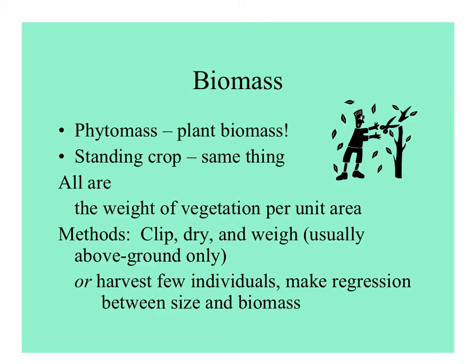Biomass is an indication of productivity, or the total plant phytomass on a site. The term standing crop means the same thing. All are different ways of saying the weight of vegetation per unit area. A way of measuring this is to cut the plant, dry it, and weigh it — usually just the above-ground part, since it's hard to exhume the whole root system. Typically, ecologists harvest a few individuals of each species and then make regressions of size and biomass to estimate biomass from DBH or canopy cover.